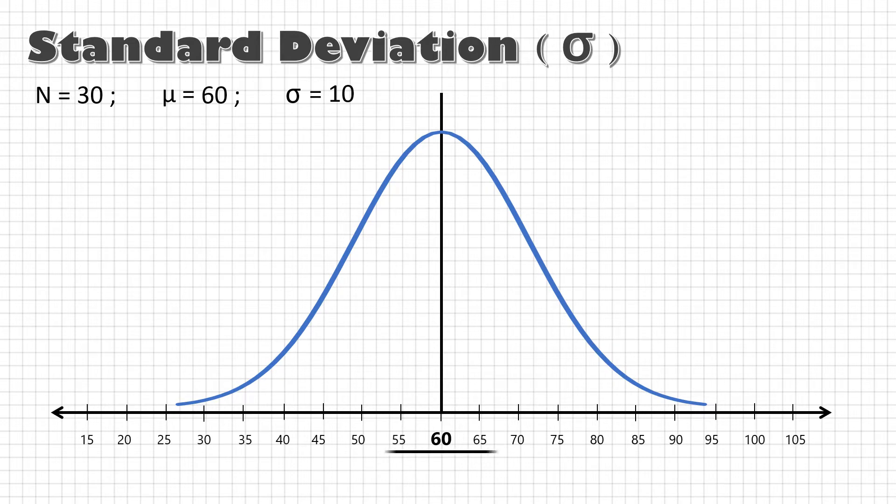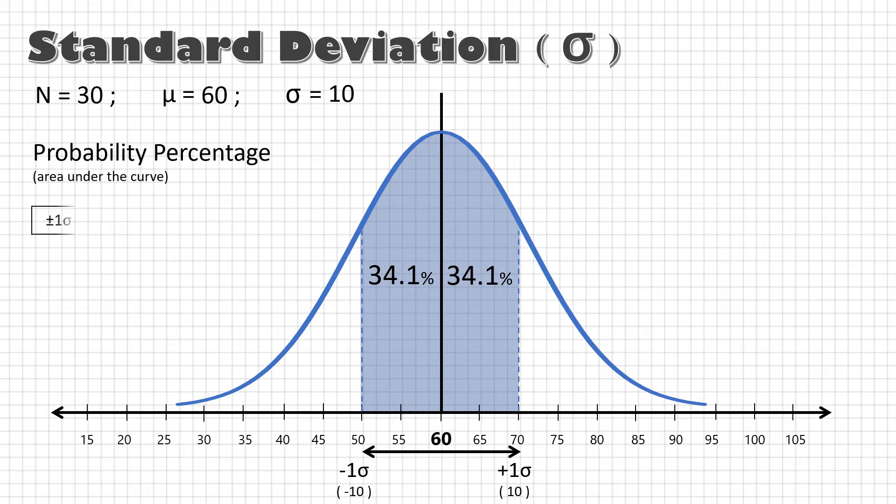Now, if I apply plus minus 1 standard deviation or sigma to the mean, it will cover 68.2% of the total area under the curve. That means there is a probability that 68.2% of the total parts produced with this process are going to be within 50 and 70. That's right. Area under the curve equals to probability percentage.